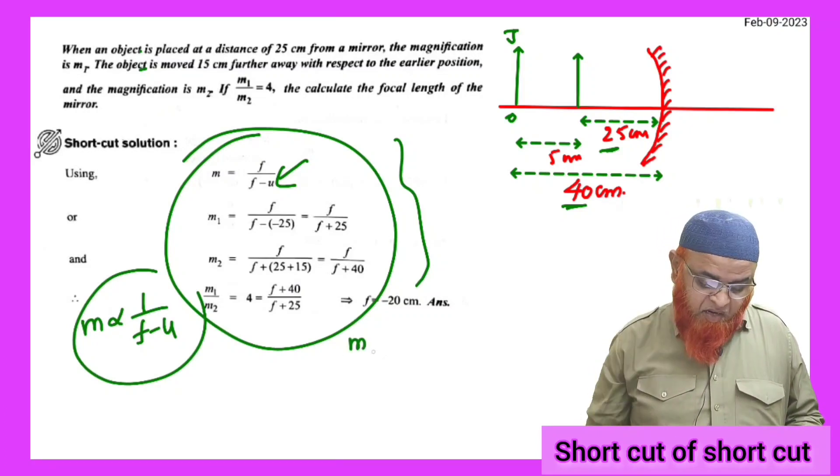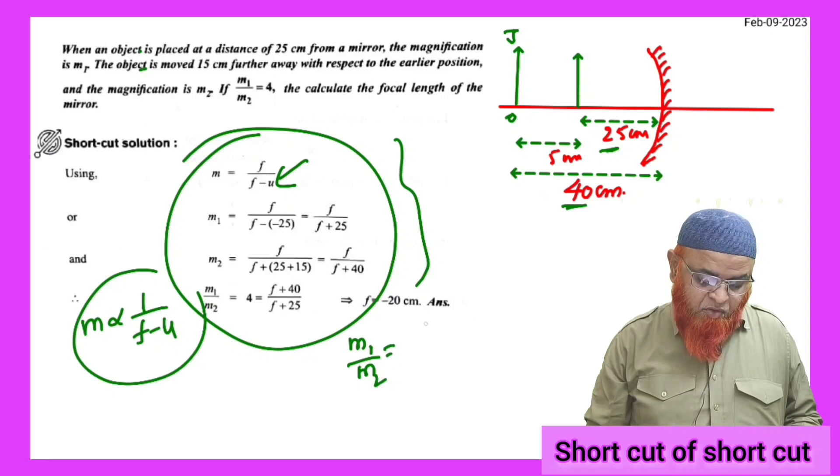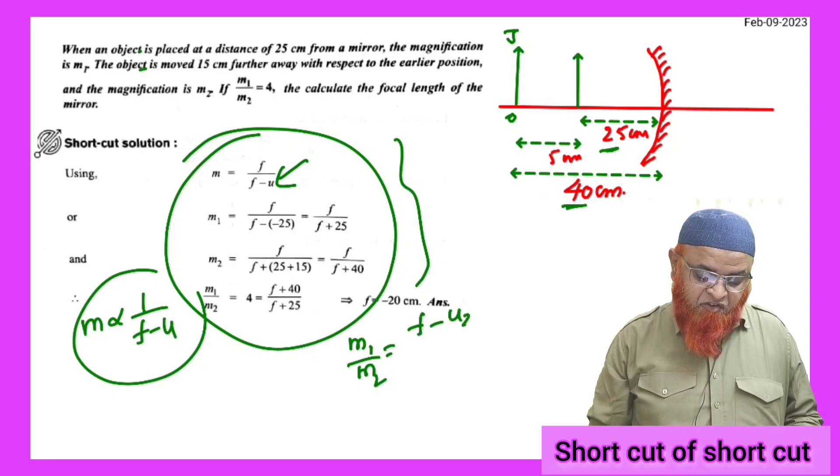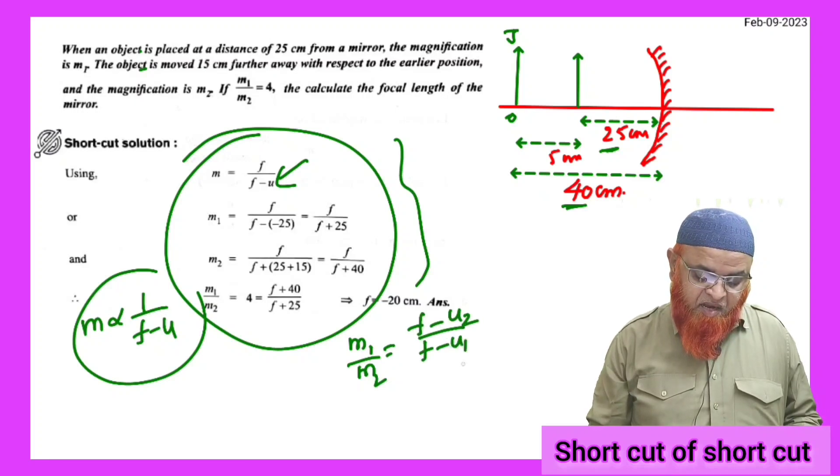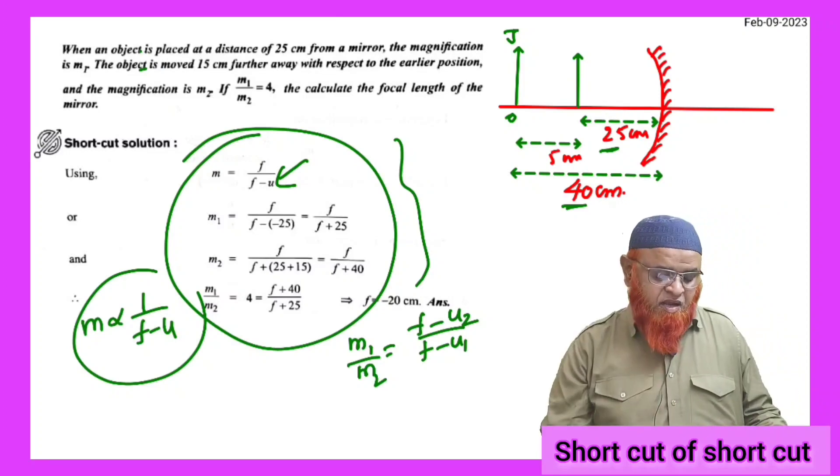Just we can do one thing here. We can write here M1 by M2 is equal to F minus U2 by F minus U1. Direct step we will get.